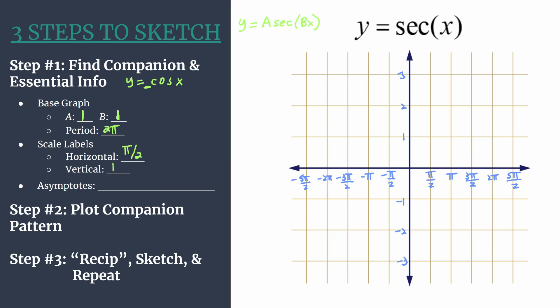And so secant is just one over cosine. So we just don't want our cosine to be zero. And we know our basic cosine function is zero at pi over two plus pi k. So take your horizontal inputs of your original function and we set it equal to pi over two plus pi k. And since this is just the parent function secant, we don't have to solve for x because it's just one x equals pi over two plus pi k.